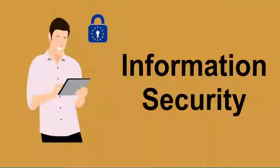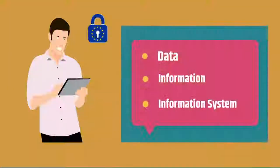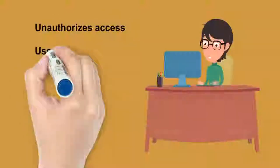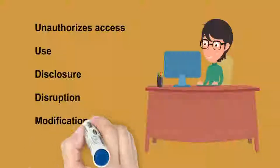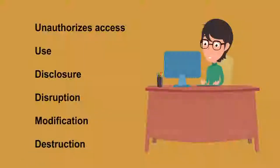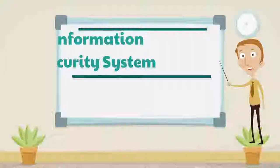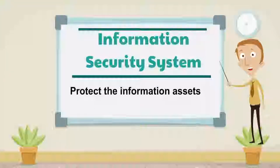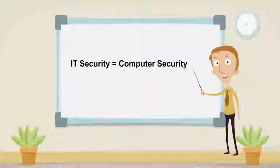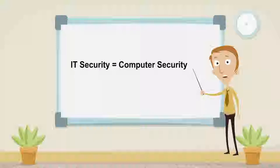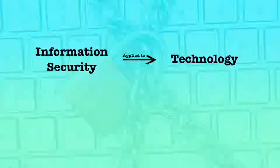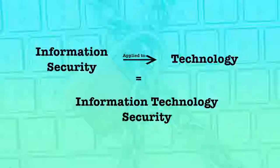Information security means protecting data, information and information systems from unauthorized access, use, disclosure, disruption, modification or destruction. Information security management is a process of defining the security controls in order to protect the information assets. IT security is sometimes referred to as computer security. Information technology security is the information security applied to the technology.